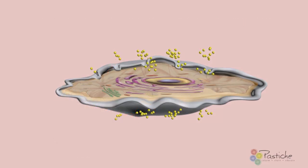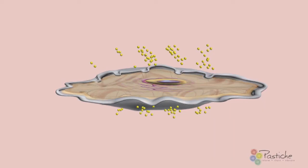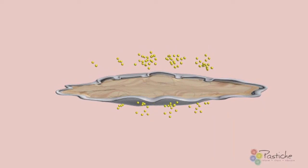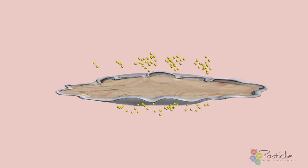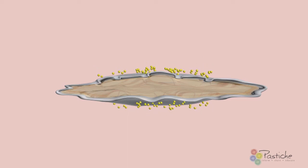Finally, the nucleus of the cell deactivates, triggering the next generation of ascending cells within the basal layer. The remaining corneodesmosomes dissolve. This final action prepares the cell for desquamation as a stand-alone, independent cell.